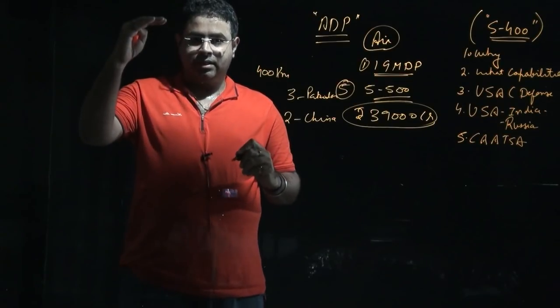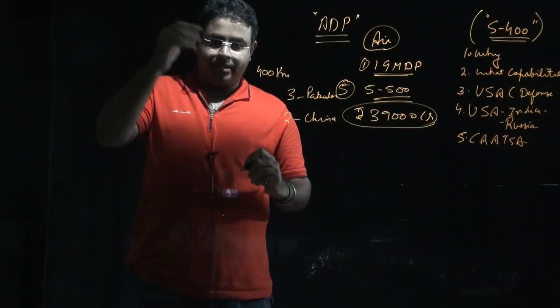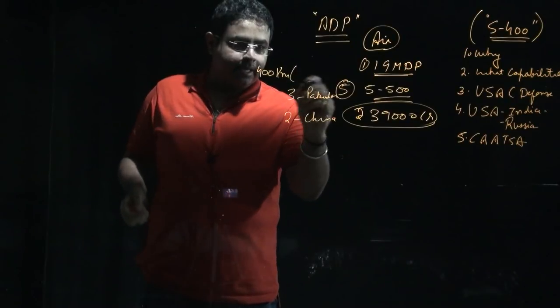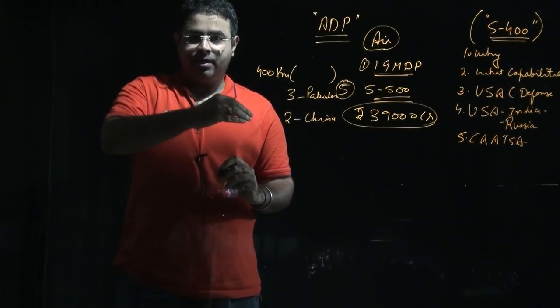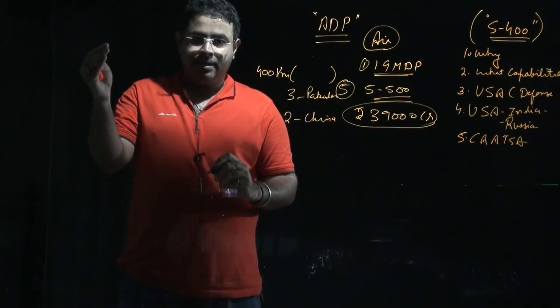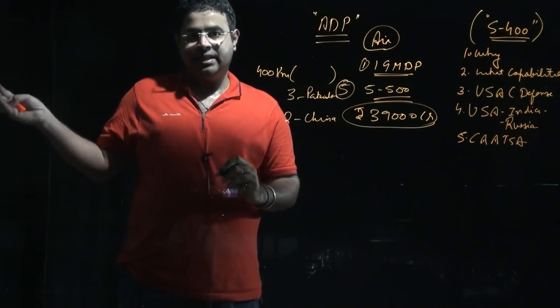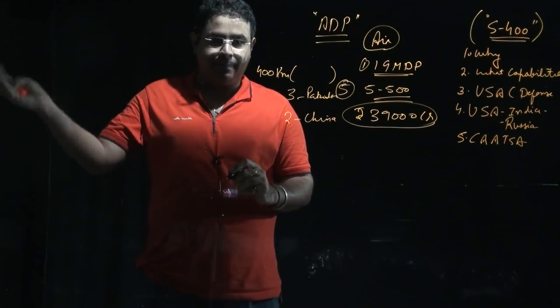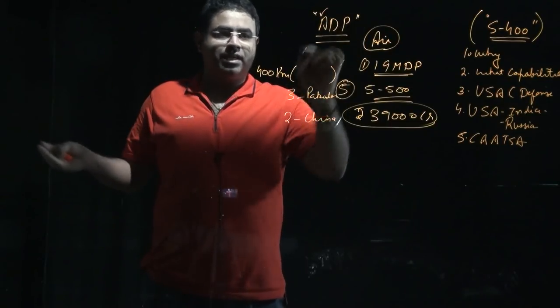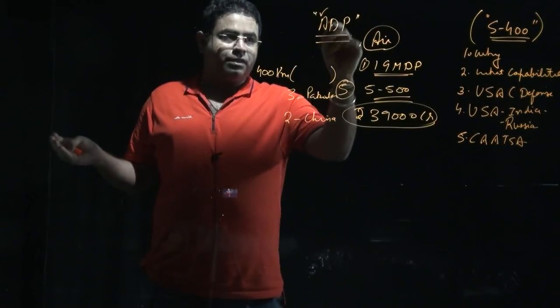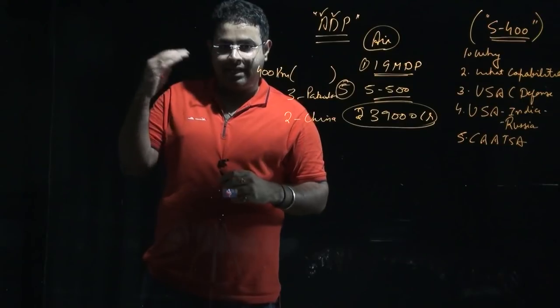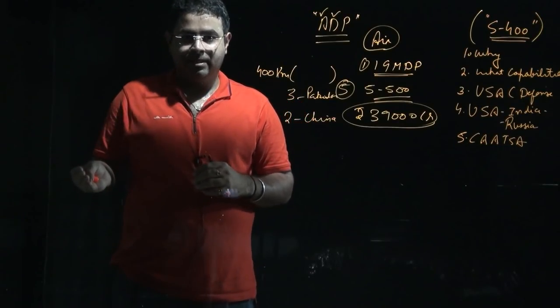So this is the capability of S-400. Its range is 400 km, and altitude-wise up to 30 km. Any incoming missile into India, this will increase India's capability to stop it. This is how it will help India in strengthening its air defense preparedness and capabilities.